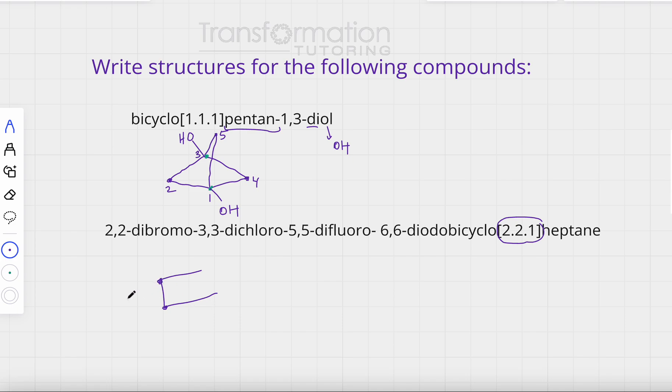I have a two carbon bridge - this is two carbons. Then I'm going to have another two carbon bridge - this is two carbons. Then I have a one carbon bridge - this is one carbon. Notice I did not count the bridgehead carbons.